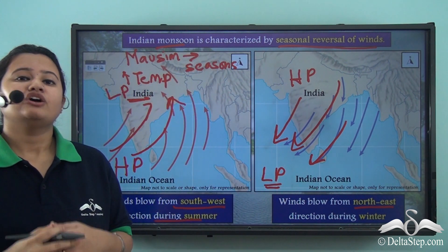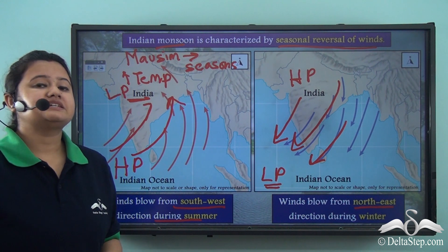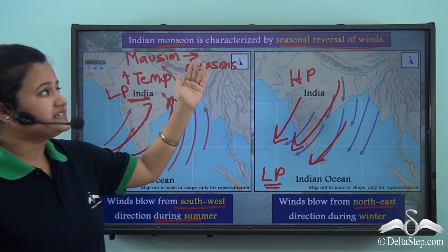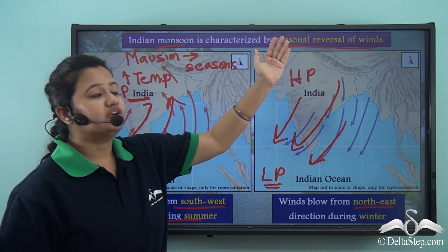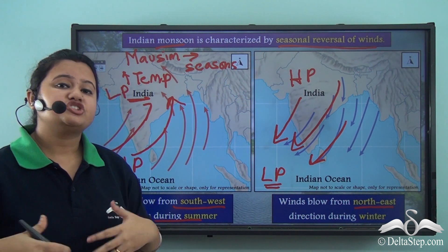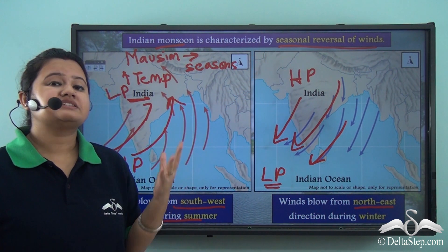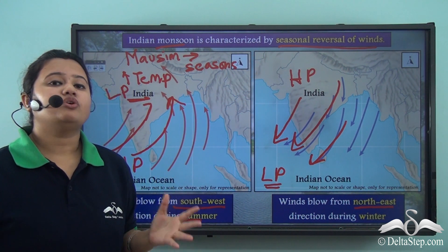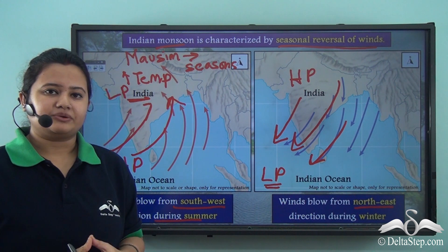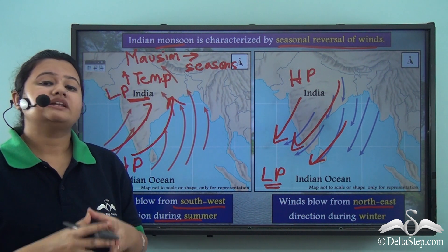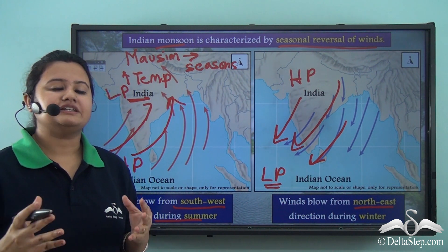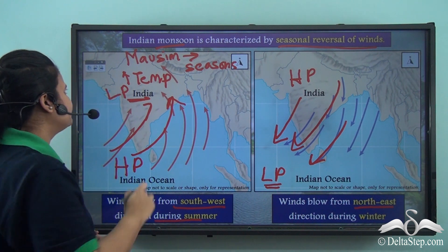Thus, Indian monsoon is characterized by seasonal reversal of winds — with change in seasons, the wind flow also changes direction. Now let us explore some other characteristics of Indian monsoon.